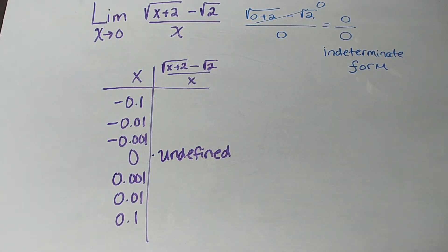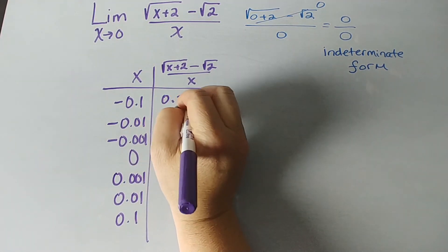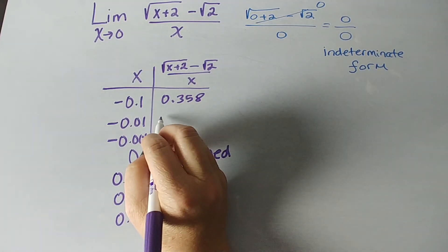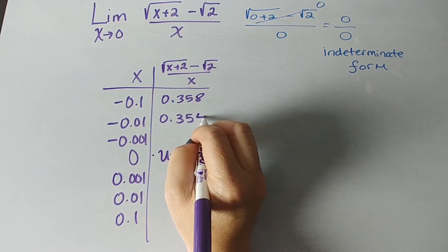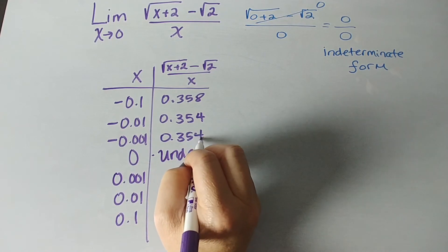Okay, it's undefined at 0 because we have a 0 in the denominator. Okay, so, looking at this, 0.35 rounding, we get 8. Let's see if we put this in, 0.354. And 0.354 is what we get here.